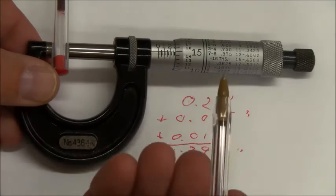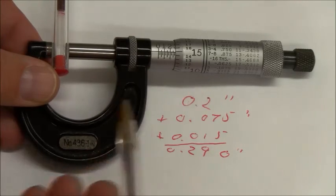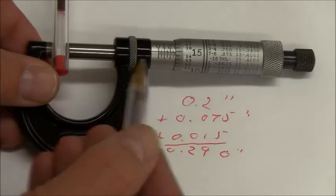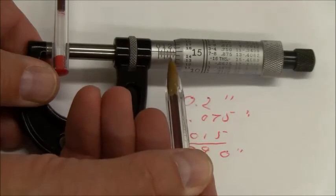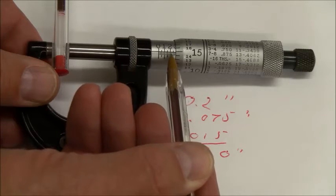So again, in reading, start by zeroing the measurement, open it up to fit the piece in, snug it to the piece, read the tenths, then on the scale past the tenths, read the 0.025 increments.